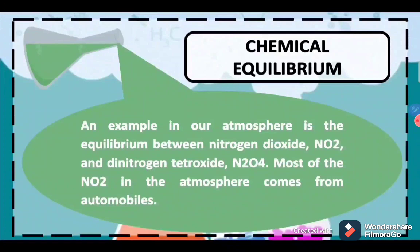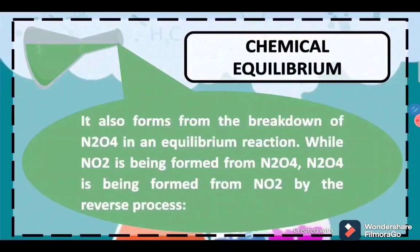An example in our atmosphere is the equilibrium between nitrogen dioxide (NO2) and dinitrogen tetroxide (N2O4). Most of the NO2 in the atmosphere comes from automobiles. It also forms from the breakdown of N2O4 in an equilibrium reaction. While NO2 is being formed from N2O4, N2O4 is being formed from NO2 by the reverse process.